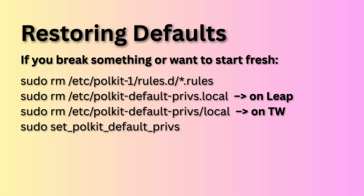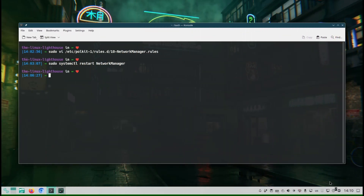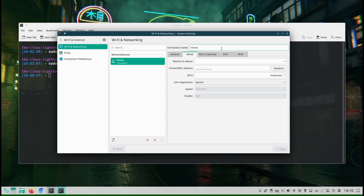Restoring defaults: if you break something or want to start fresh, delete the rules files you created under /etc/polkit-1/rules.d, and delete /etc/polkit-default-privs.local on Leap or /etc/polkit-default-privs/local on Tumbleweed. When you finish deleting the files, remember to run the command set_polkit_default_privs.